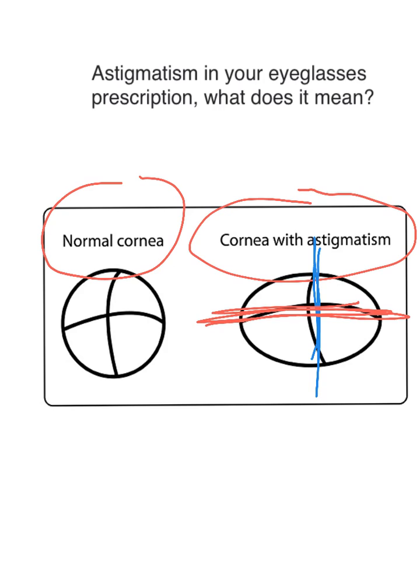In a normal cornea without astigmatism, the curvature is uniform in the vertical axis and uniform in the horizontal axis. In an eyeglass prescription without astigmatism, you have just one number — for example, minus one.